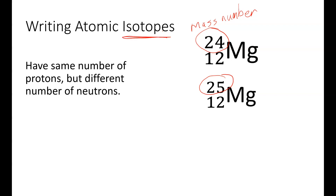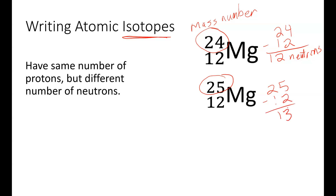So these are different isotopes of magnesium. To find the number of neutrons, we take the mass number and subtract the atomic number. We have 12 neutrons for magnesium-24. For magnesium-25, we have 25 minus 12, which gives us 13 neutrons.